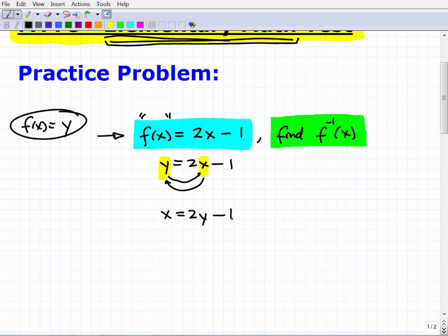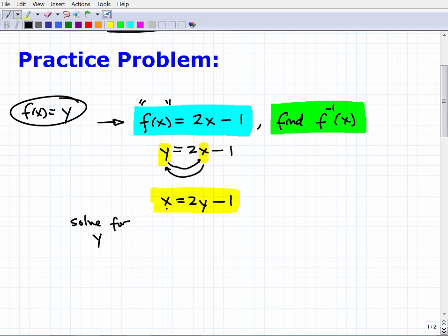In other words, where the y is, what's in the y space or y location here, I'm going to put the x there, and then the y I'm going to put where the x is at because I'm just going to basically switch these guys. So when I do that, I get x is equal to 2y minus 1. So hopefully that makes sense. So at this point, all we need to do is solve for y in this new equation.